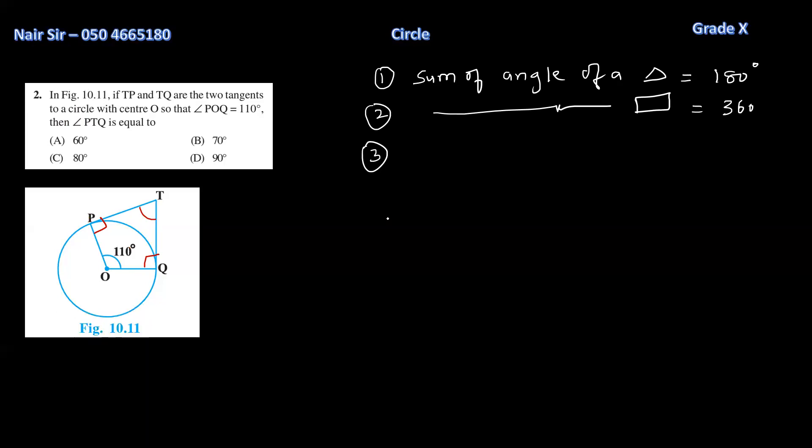Now what? I have got angle P. Angle P plus angle T plus angle Q plus angle O is equal to what? 360. Now it is simple. P is 90, T name on, plus Q 90, plus O 110 degrees is equal to 360. Angle T plus 290 is equal to 360. Transposing, angle T is equal to 360 minus 290, and that is nothing but 70.